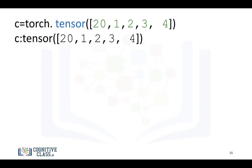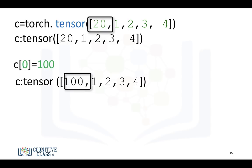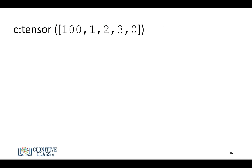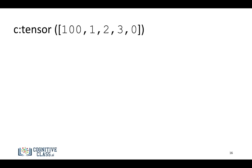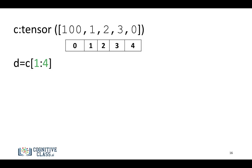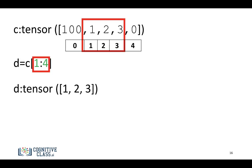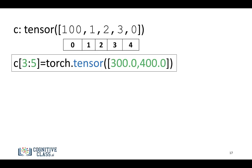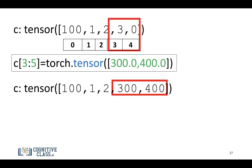Let's go over some basic indexing and slicing operations. We have a following tensor, and we can change the first element to 100 — the result is 100 instead of 20. We can change the fifth element, and now it's 0 instead of 4. We can also change multiple indexes. We can use slicing: consider tensor C with following indexes, and we can assign indexes 1, 2, and 3 from tensor C to tensor D. We can also assign the values 300 and 400 using slicing, and the values change accordingly.